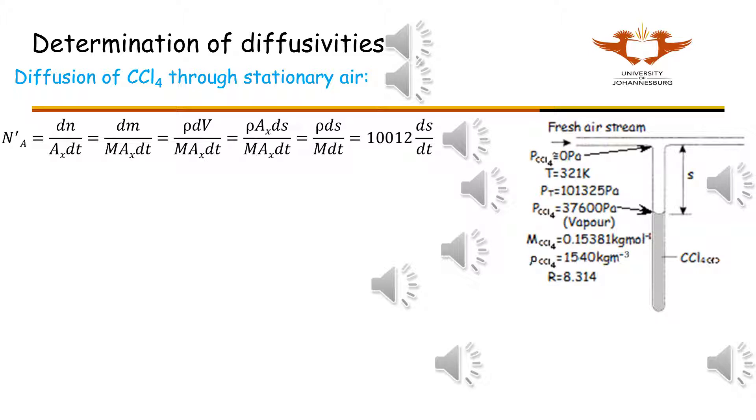N A dashed is the effective flux of carbon tetrachloride up the tube, which includes diffusion and bulk flow. The moles can be converted to mass, volume, and distance using molecular mass, density, and the definition of volume respectively. Note that the evaporation rate is equal to N A dashed to maintain the liquid vapor equilibrium.